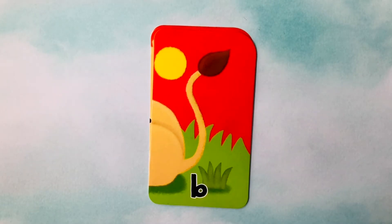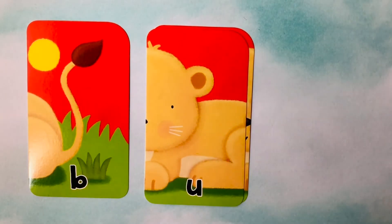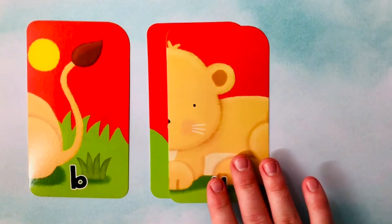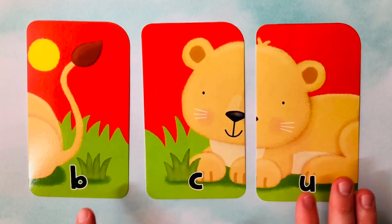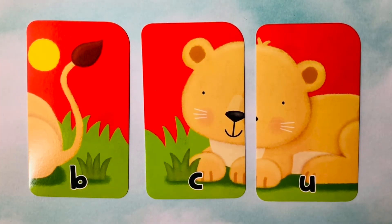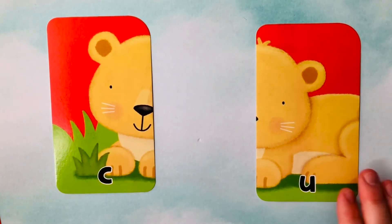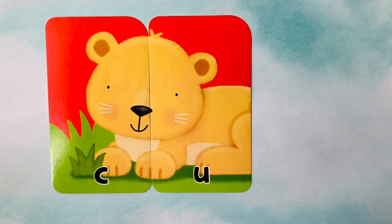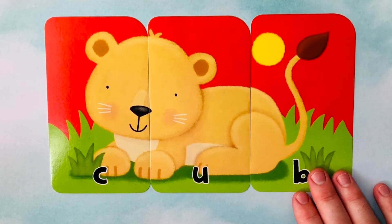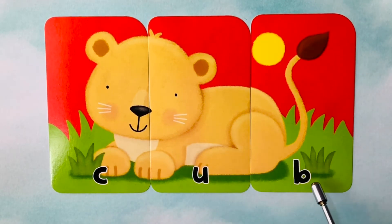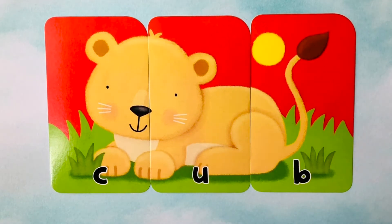Let's learn how to spell words. Looks like we're starting off with a B. We also have a U. And our third letter is a C. I think we're trying to spell the word cub. Cub starts with a C, follows with a U, and finishes with a B. C-U-B spells cub.